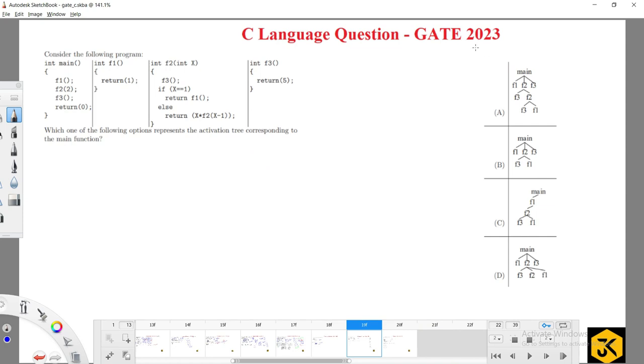Hi, let's see one of the GATE questions which was asked in the year 2023. Consider the following program - here various kinds of functions are given: one is the main function, f1 function, f2 function, and f3 function.